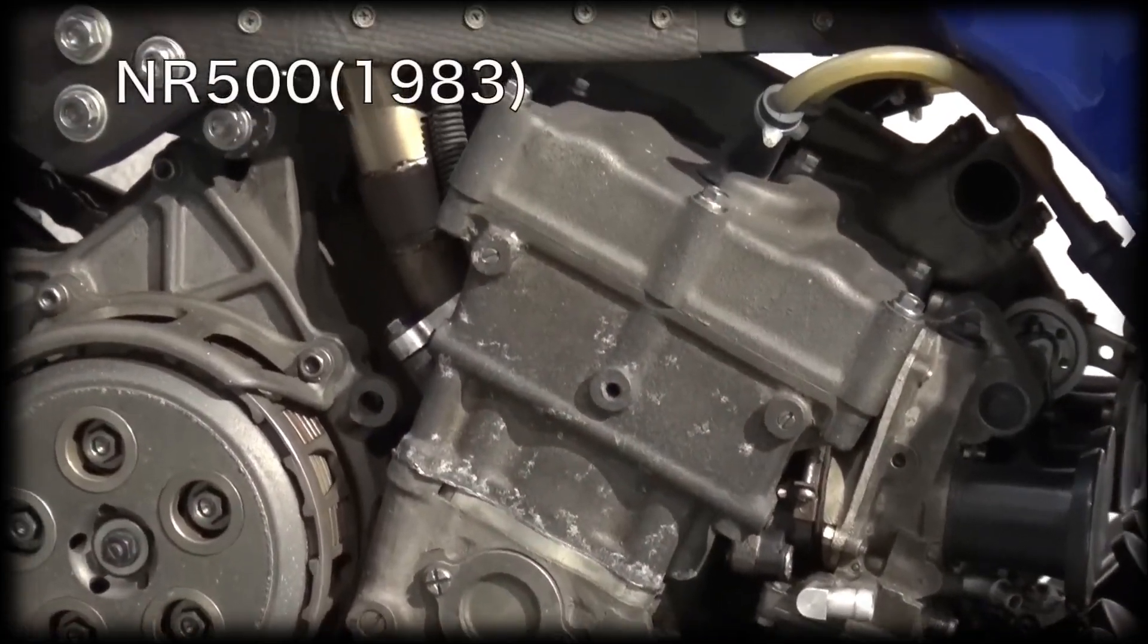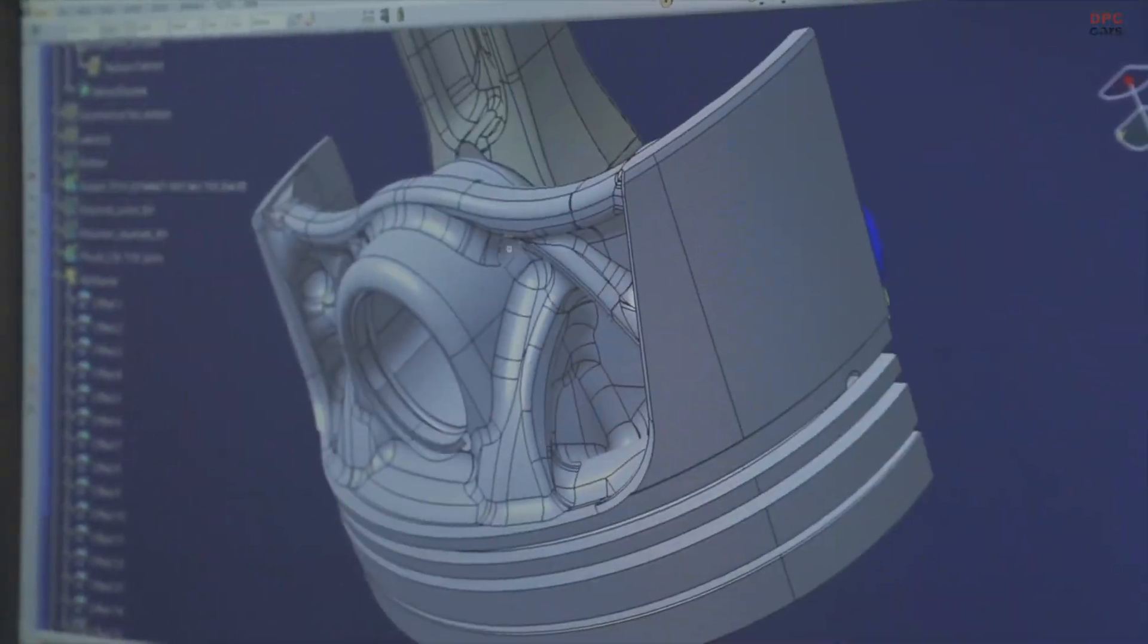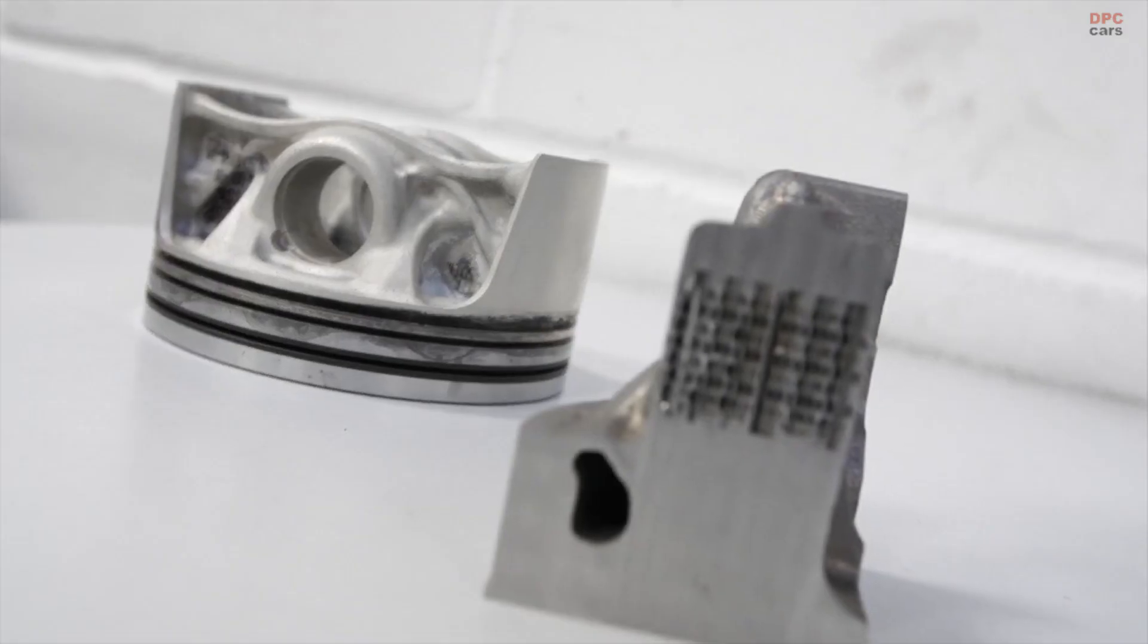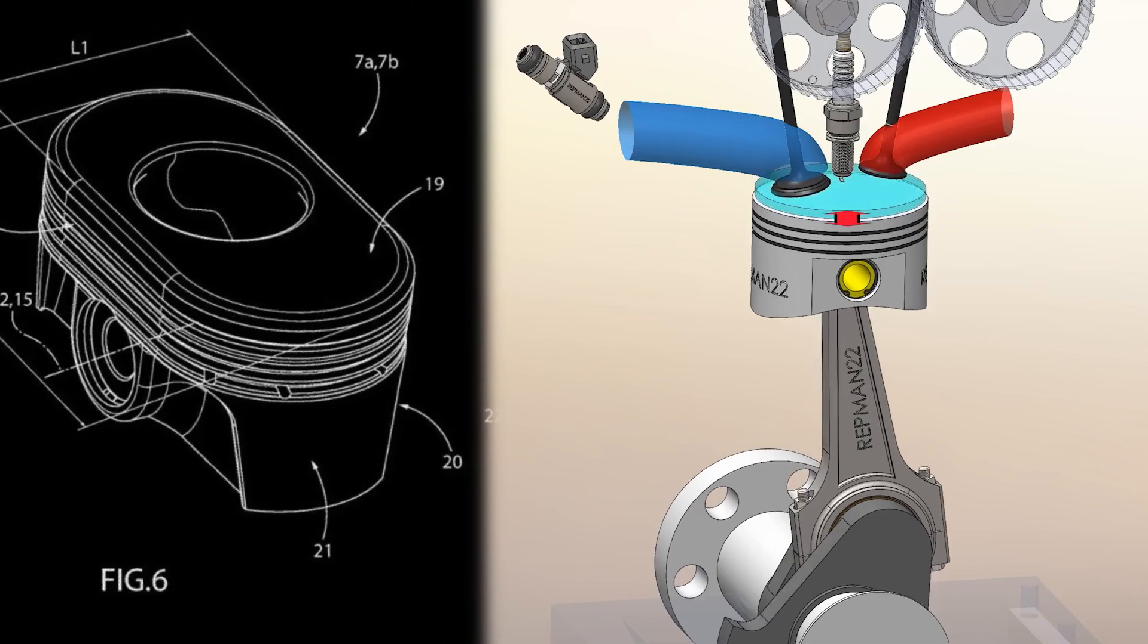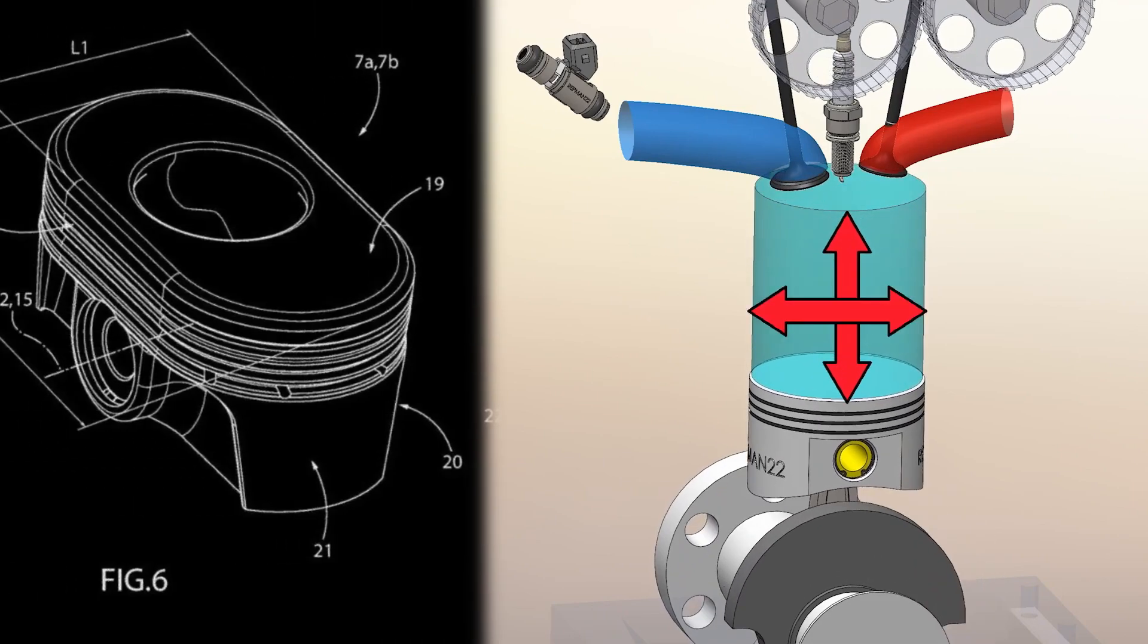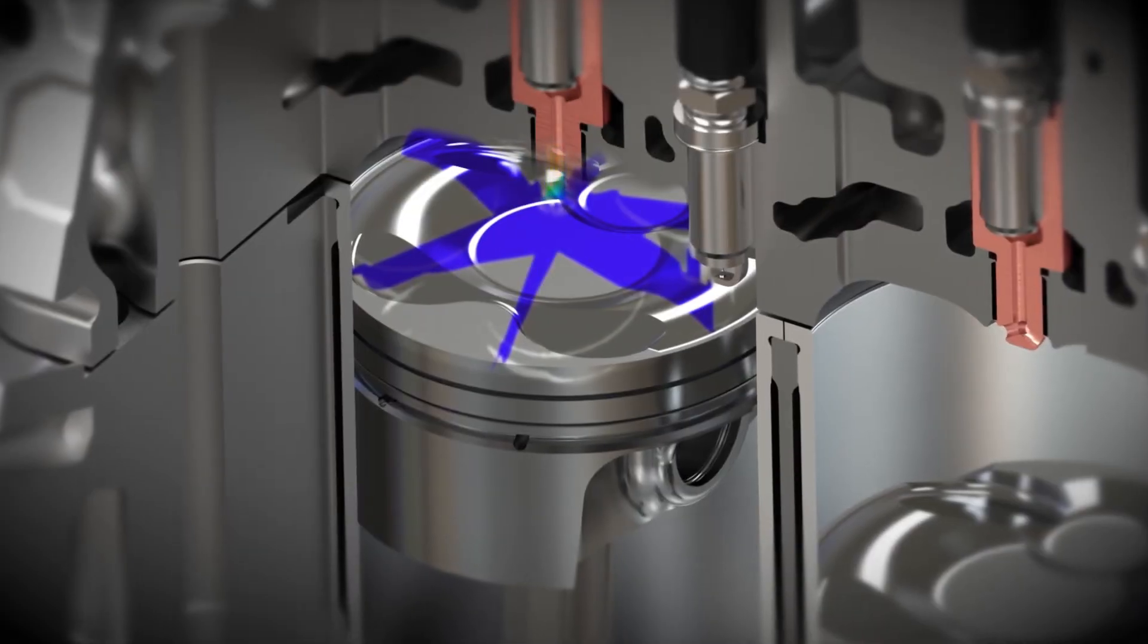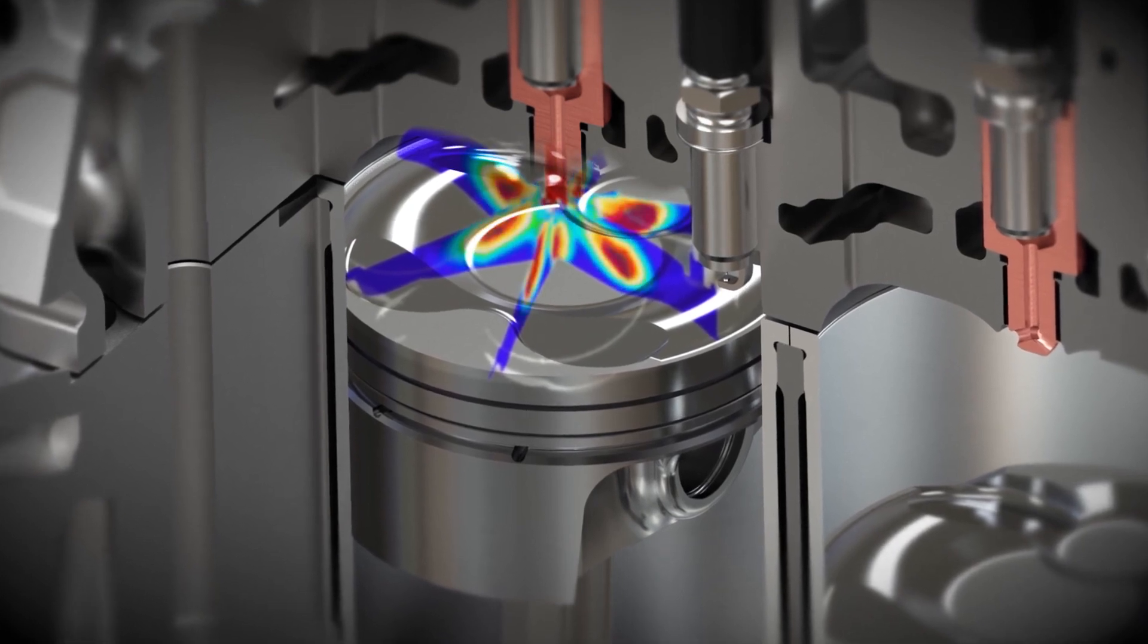So, what do we have in the end? Honda showed 50 years ago that oval pistons work, and they're a reliable solution. Nowadays, 3D modeling and 3D printing have advanced much further, making pistons in supercars lighter and more reliable. The oval piston could even increase efficiency by reducing friction, although the durability of such a piston will definitely be lower.